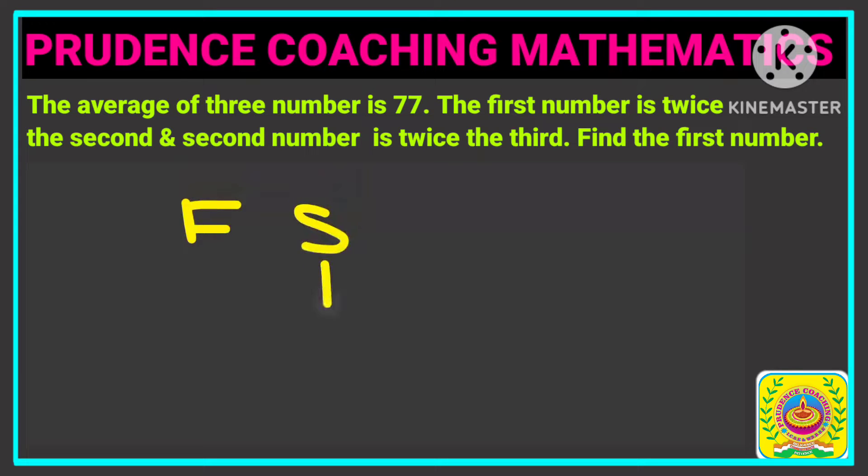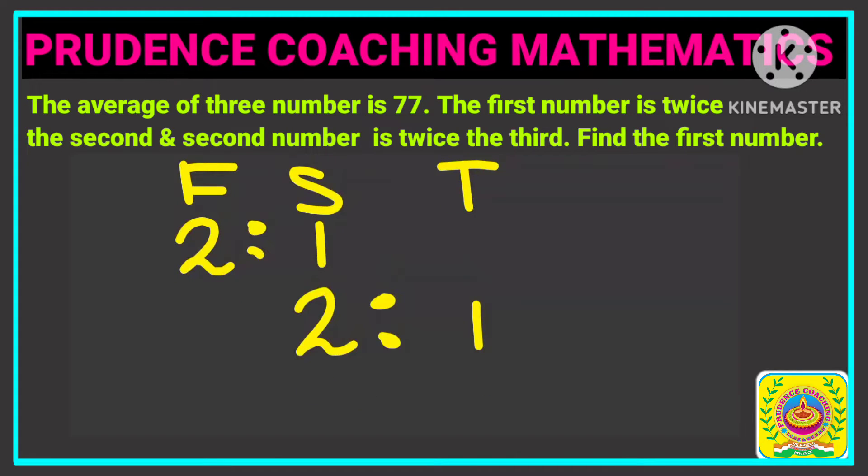That means if the second number is 1, then the first number is twice, that is 1 into 2. Twice the second number. And the second number is twice the third number. So this is the third number. Then if it is 1, then twice means 1 into 2, you will get the second number.